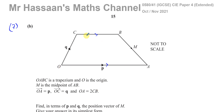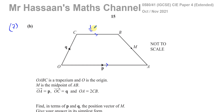So OA equals 2 times CB. If O to A is p, then CB must be in the same direction as OA and half the length, because OA is 2 times CB, meaning CB is half of OA. So this vector CB would be ½p, since they're parallel and can be expressed in terms of each other.